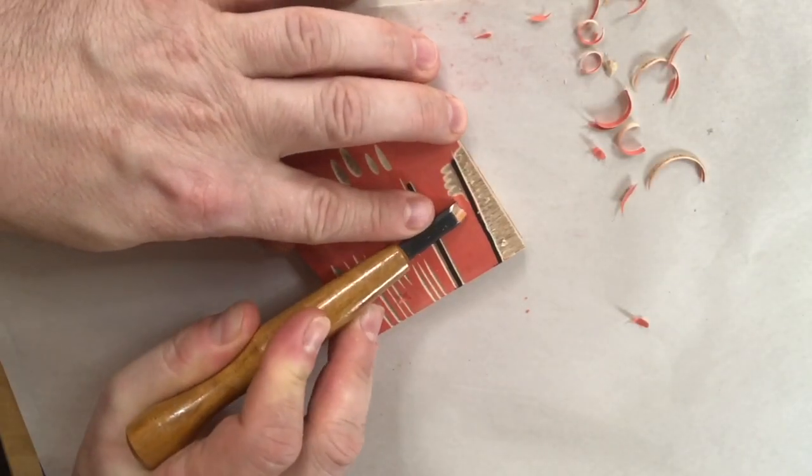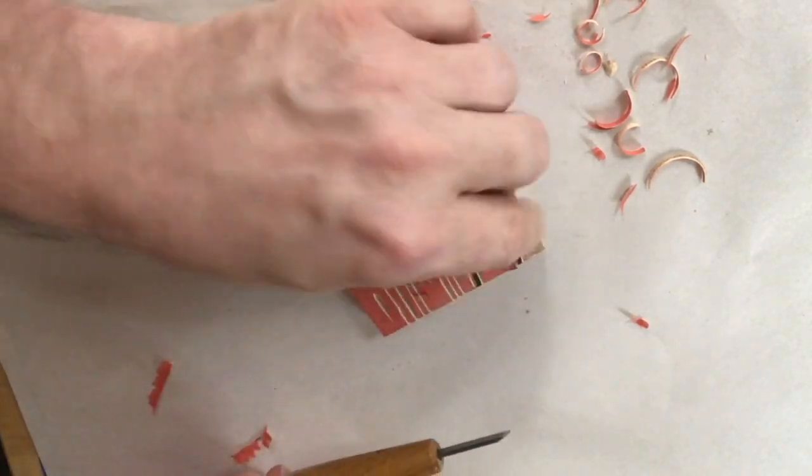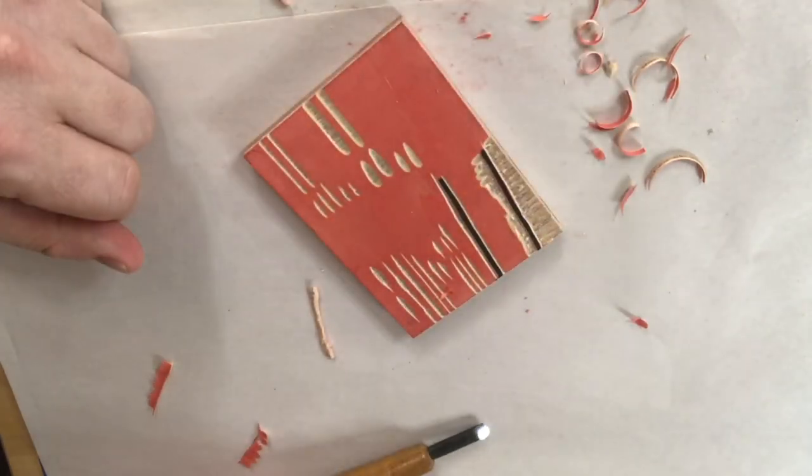Now you can also use the fan chisel to clear out up against these lines. Both the U-Gouge and the fan chisel are used in this way, often in combination with the knife.